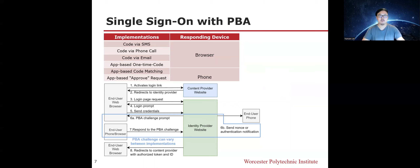A phone-based authentication challenge is typically a task with specific instructions that can be completed only through the user's phone — for instance, inputting a one-time code transmitted only to the user's phone, or approving the login using an authenticator application. The response to the challenge can be sent through the browser or through the user's phone.